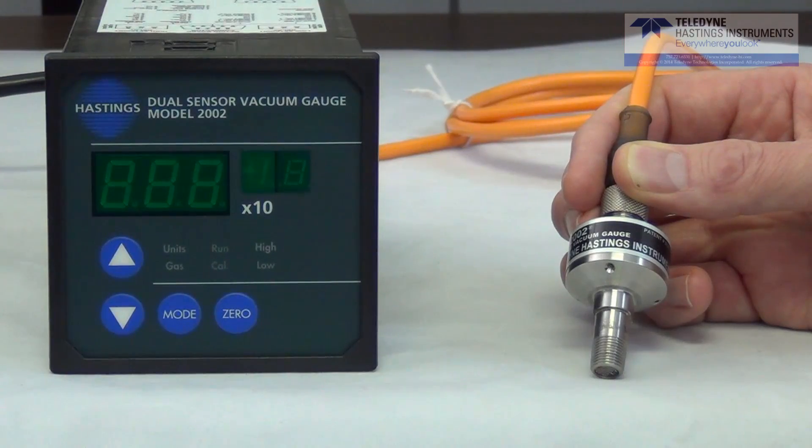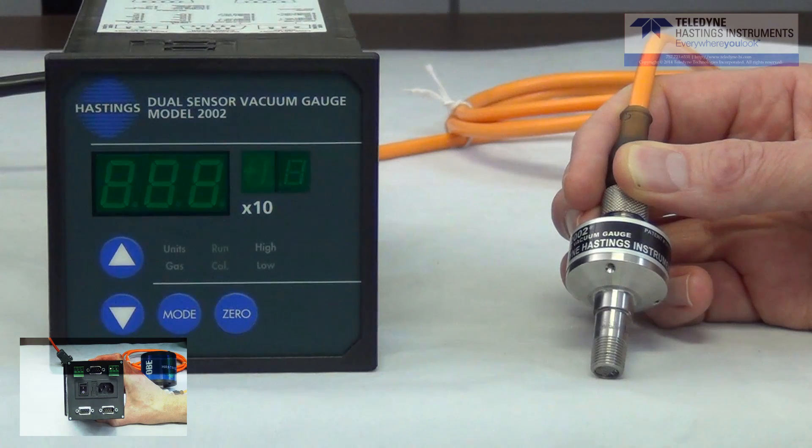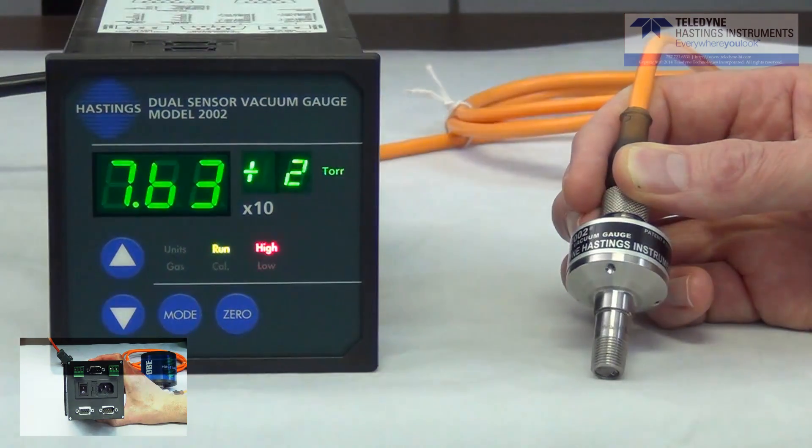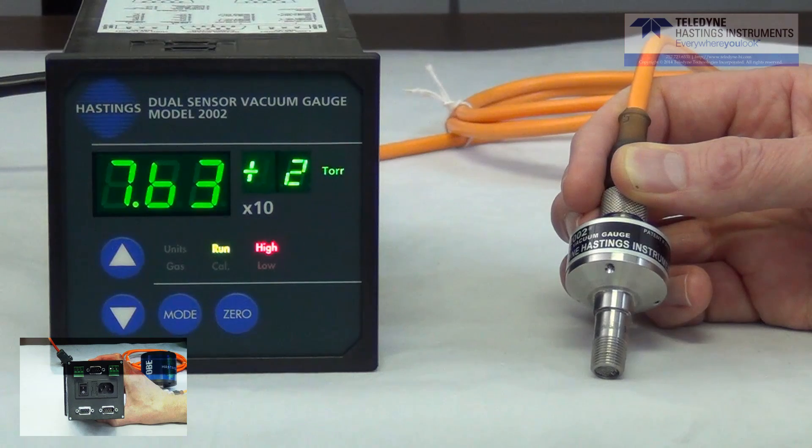So now let's look at the operation of the 2002. When the instrument is initially powered, the microprocessor in the readout goes out and gathers the gauge tube's calibration data. Remember, it's stored on the memory chip that's in the cap assembly. So you always want to make sure that your cable is connected before you turn on the power.